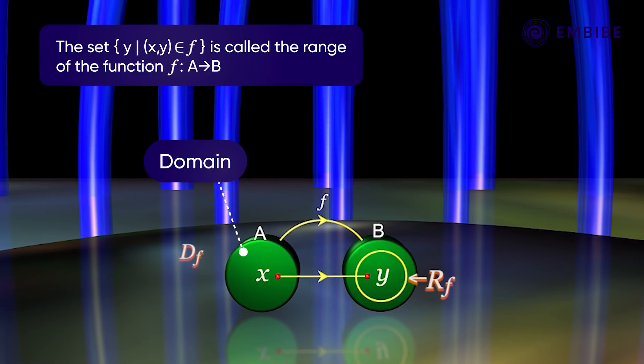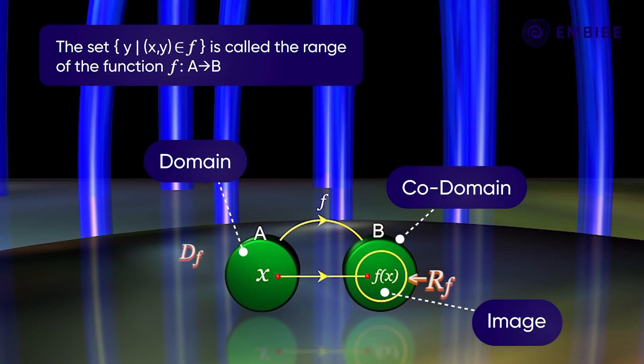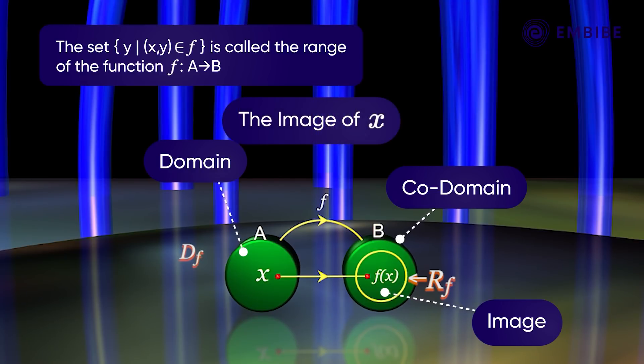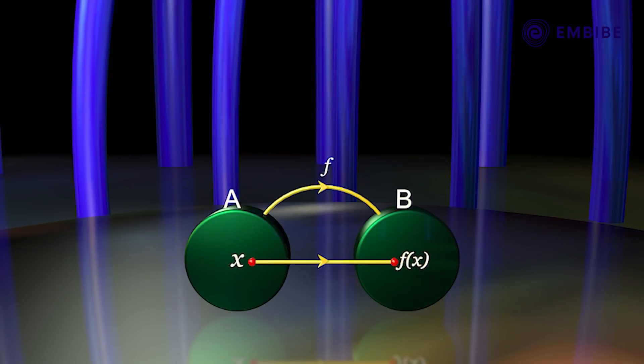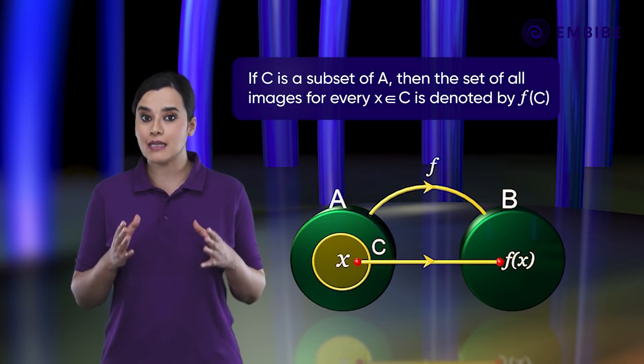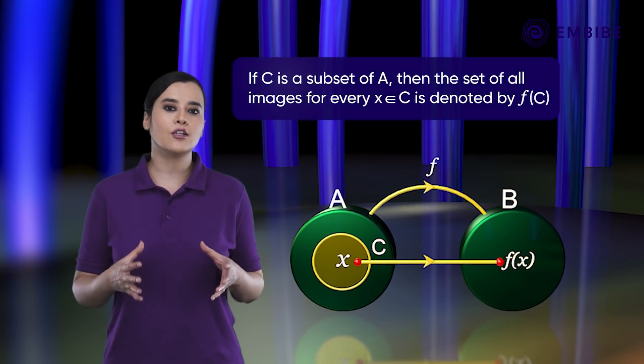B is called the co-domain of f. If x belongs to A, then f(x) is called the image of x under function f. If C is a subset of A, then the set of all images for every x belongs to C is denoted by f(C).